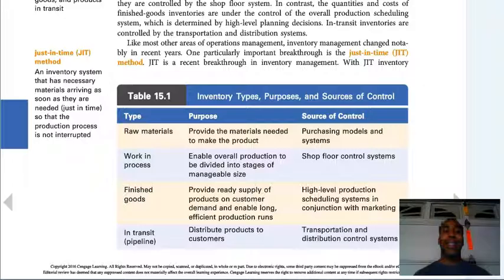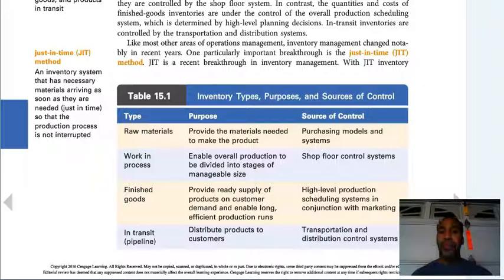Just-in-time is an inventory system in which necessary materials arrive as soon as they are needed, so the production process is not interrupted. It's very complex to pull off, but if you do, it'll save the company a lot of money. For example, I don't need a large supply of beef — I just need exactly how much I need for the day, keeping it fresh.